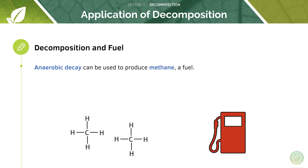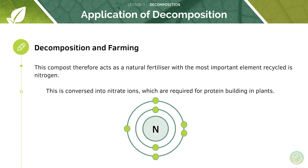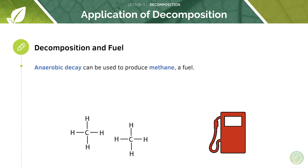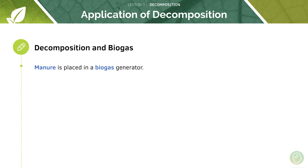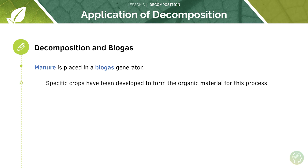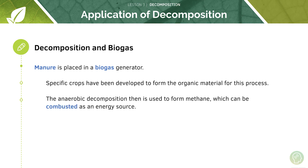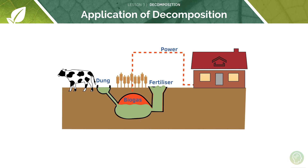Anaerobic decay can actually be used to produce methane as fuel. When decomposers act in the absence of oxygen, they produce carbon dioxide and methane, hence producing methane as the fuel. Decomposition can also be useful in a biogas generator — manure is placed in a biogas generator, specific crops have been developed to form the organic material for this process, and the anaerobic decomposition is then used to form methane, which can be combusted as an energy source.